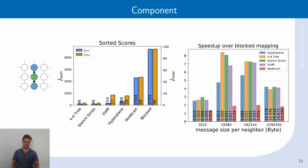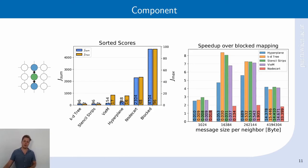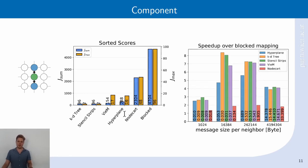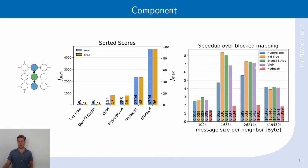Looking at another stencil — the component stencil, named so because it creates disjoint components in the grid — we see very interesting results: the KD tree and stencil strips algorithm both manage to find optimal mappings for this instance. This is followed by the Vienna mapping tool, then hyperplane, where we can see the restriction imposed by the computed input n. This is followed by NodeCAD and then the blocked algorithm. Looking at speedup for different message sizes per neighbor, our algorithms obtain speedups of up to 8, consistently outperforming NodeCAD and the Vienna mapping tool for some message sizes.